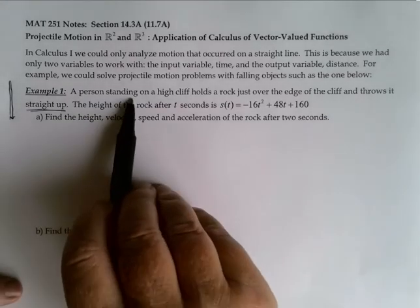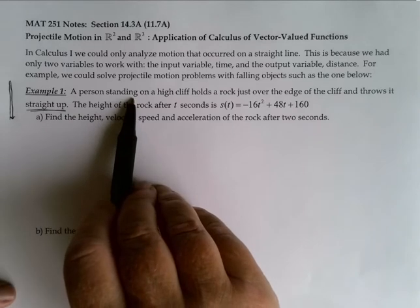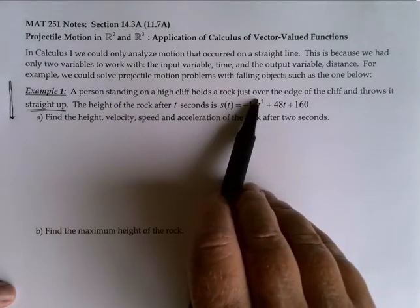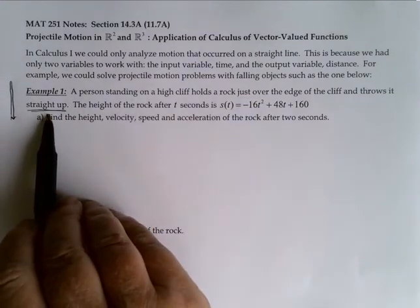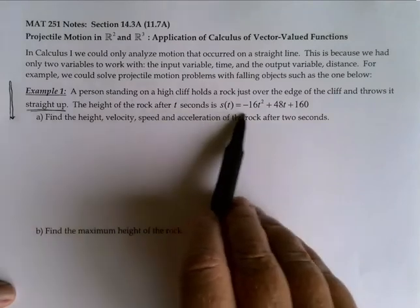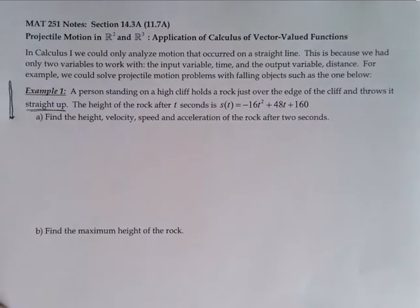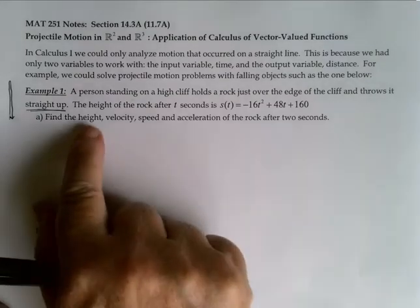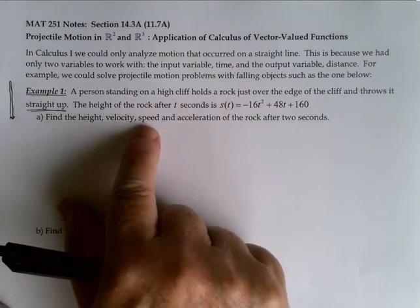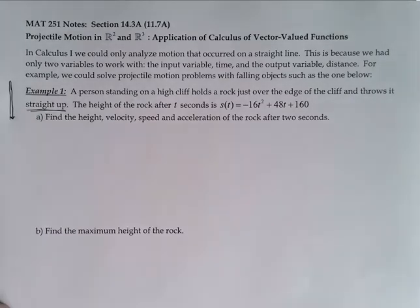Here we have a person standing on a high cliff. They're holding a rock just over the edge of that cliff, and they throw it straight up. The height of the rock after t seconds is given by this height function s. I'm going to start by asking for height, velocity, speed, and acceleration after two seconds.